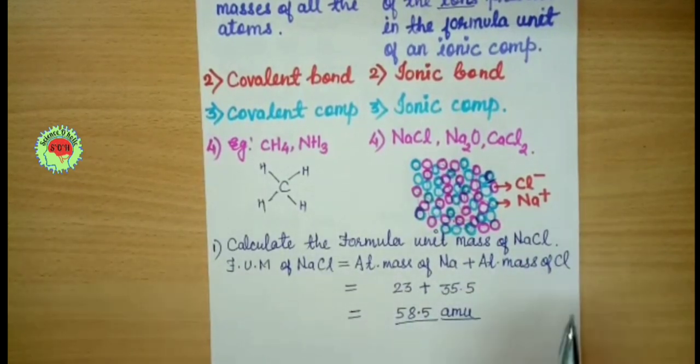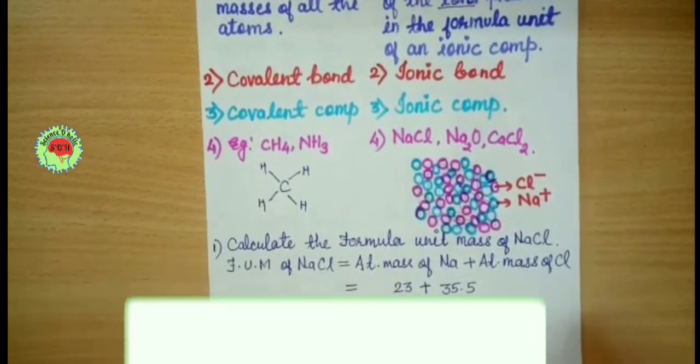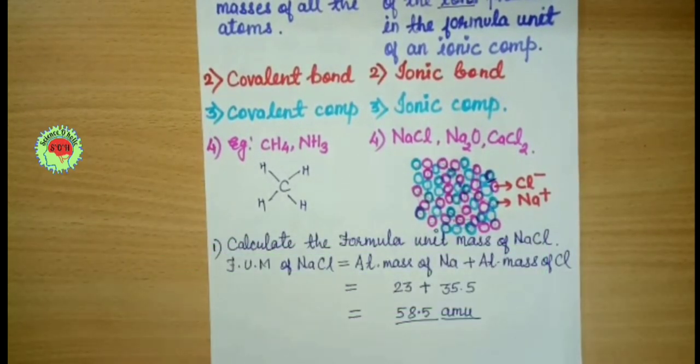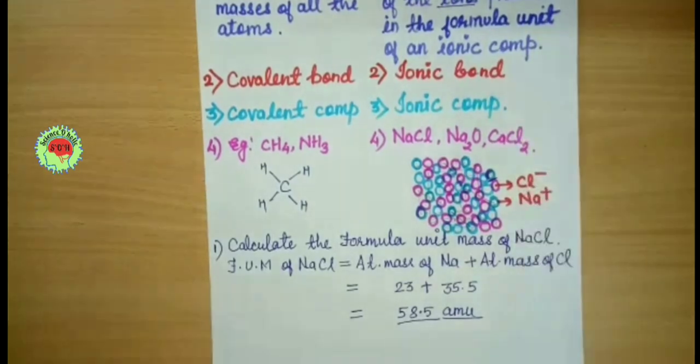Formula unit mass and molecular mass - there is no difference in calculation, but the only difference is: when there is an ionic compound, we calculate formula unit mass, and when there is a simple molecule, we calculate molecular mass.